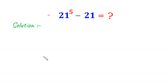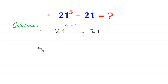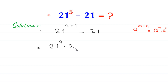Hello everyone, welcome. We will solve this very nice exponential problem: 21 to the power 5 minus 21. This 21 to the power 5 can be written as 21 to the power 4 plus 1, minus 21. By using the property a to the power m plus n equals a to the power m times a to the power n, this becomes 21 to the power 4 times 21, minus 21.